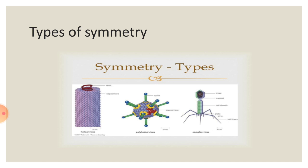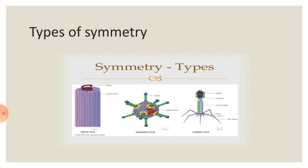When you come to the symmetry, what is symmetry? The arrangement of capsomeres in the capsid region is called symmetry. If you observe the symmetry of all the viruses, they all must come under three types of different symmetries.